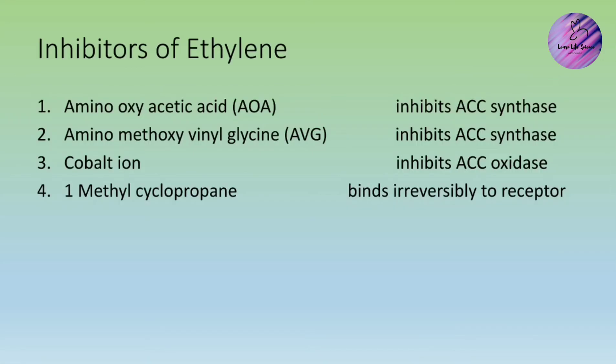Some inhibitors of ethylene include: amino-oxyacetic acid (AOA), which inhibits ACC synthase; amino-methoxy-vinyl-glycine (AVG), which also inhibits ACC synthase; cobalt ions, which inhibit ACC oxidase (silver also performs this function); and 1-methylcyclopropene (1-MCP), which binds irreversibly to the ethylene receptor.